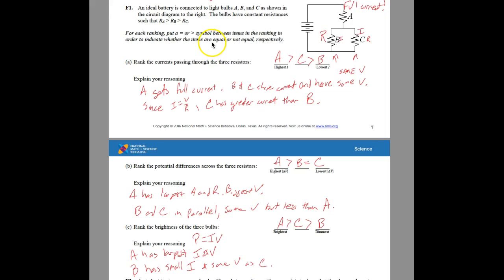Hey, this is Horner, and we're looking at the circuits review packet, question number one, free response. We have an ideal battery, which means it behaves ideally and doesn't have any resistance. It's connected to light bulbs A, B, and C as shown in the circuit diagram.